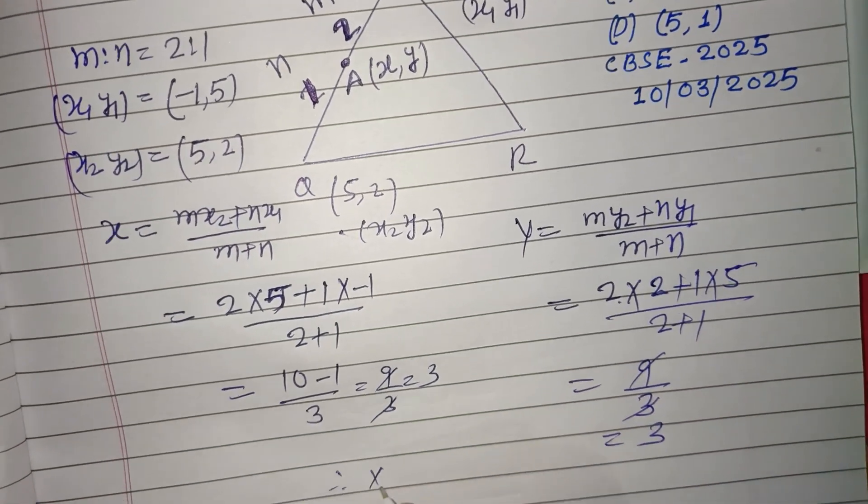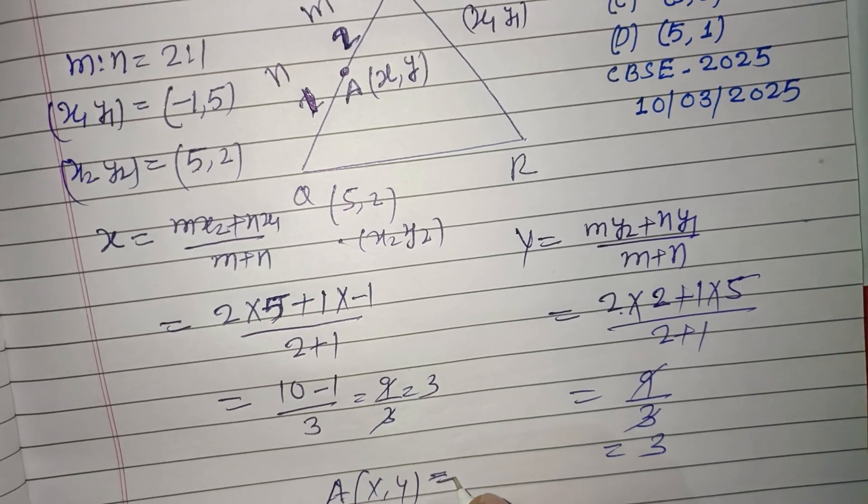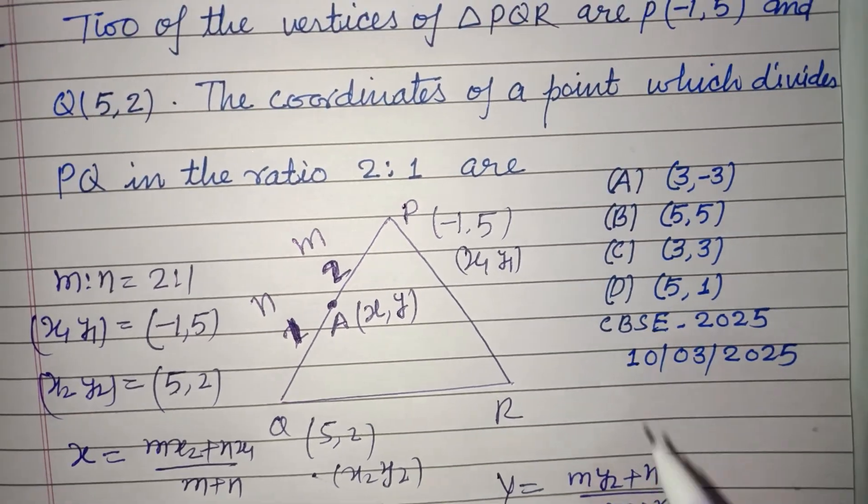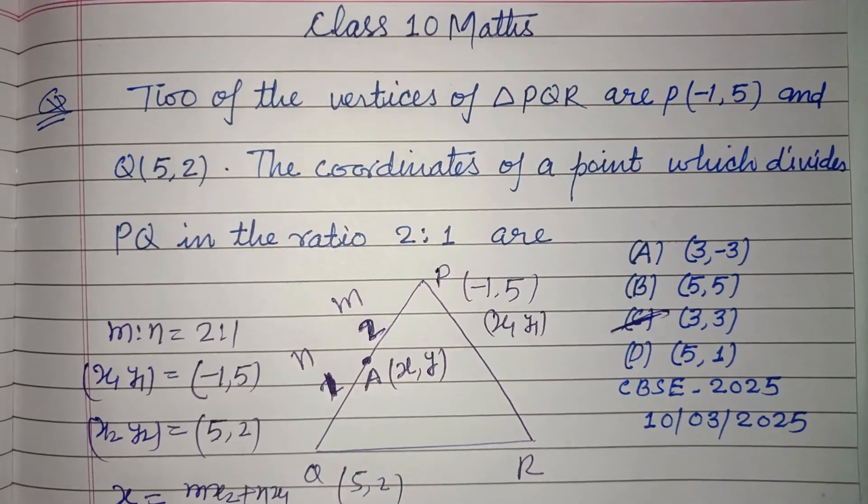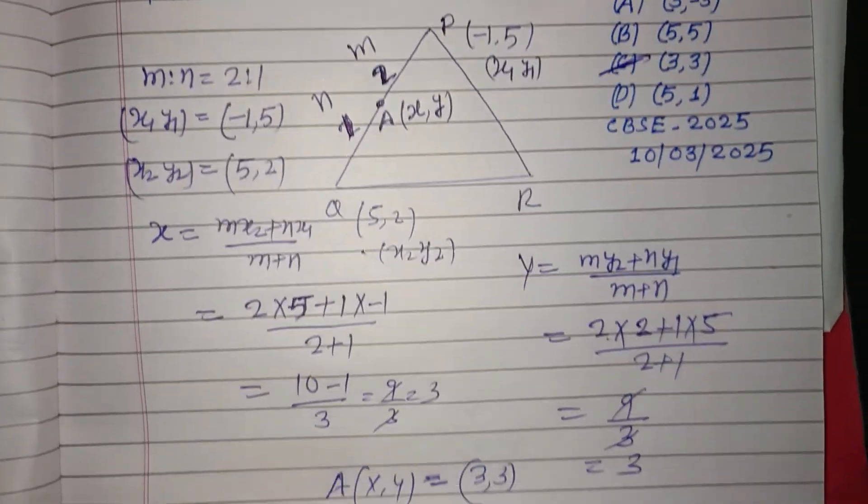So point A is (3,3). So (3,3) is the correct answer, which is found in option C. Option C is correct. I hope you got it. Please like the video, subscribe to the channel. Thanks for watching.